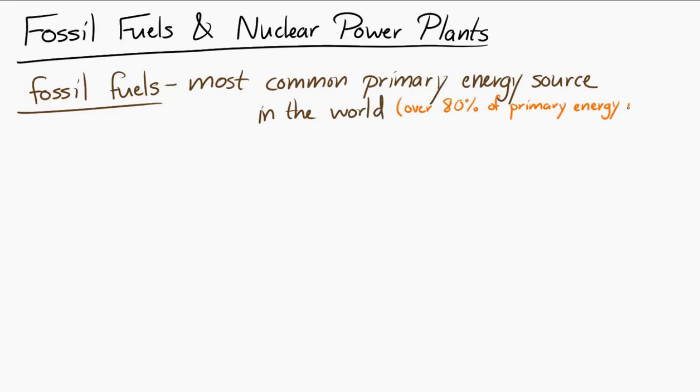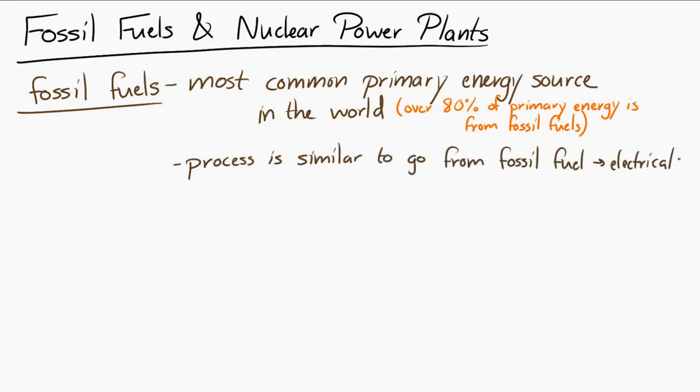Whether you use gas, coal, or oil, the way to convert the fossil fuel into electrical energy is essentially the same. You use a thermal power plant. You burn the energy source, the fossil fuel, and then thermal energy from that burning, that combustion, is transferred to water, which then boils.